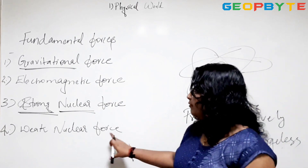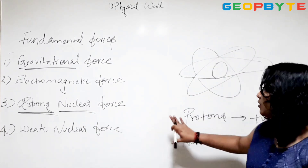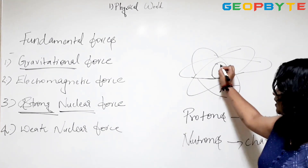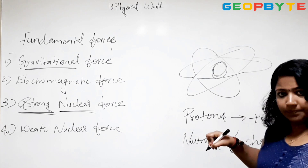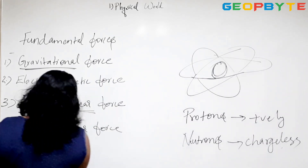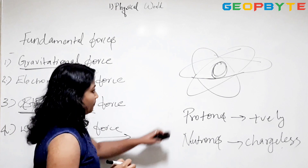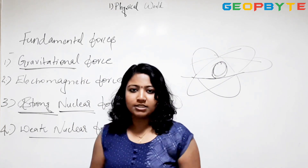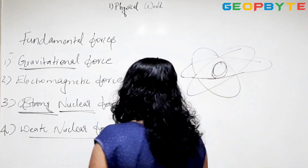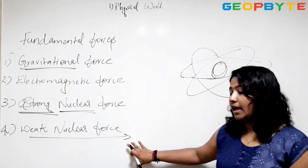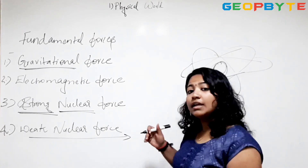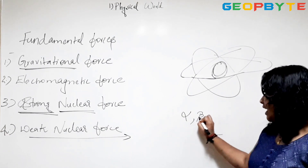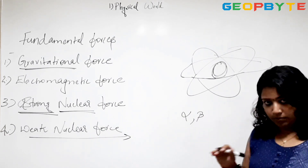Then we have weak nuclear force, which is the fourth one. Both strong nuclear force and weak nuclear force happen within the nucleus, but weak nuclear force comes into the picture when you talk about radioactive decay. For a basic understanding, it happens in heavy nuclei which emit particles known as alpha, beta, etc., which you will be learning later in much more detail.